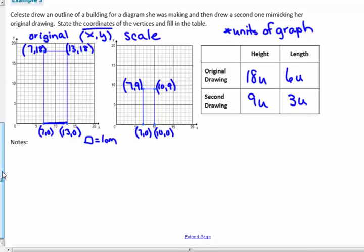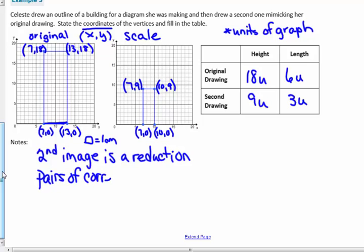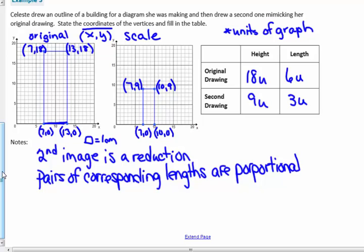My new drawing has a height of 9 units and a length of 3 units. So some notes, something that I know. I know the second image is a reduction. I know the pairs of corresponding lengths are proportional.